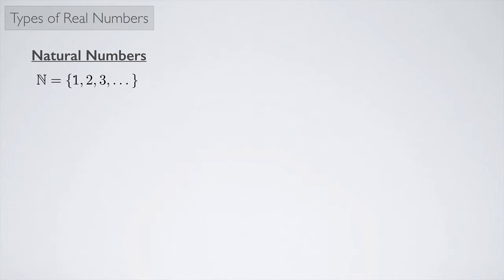And we denote the natural numbers with this funny-looking N symbol right here. And this notation, by the way, is set notation. So this says that the set of natural numbers is equal to, and then these are braces here indicating a set, and then it's the set of the numbers 1, 2, 3, and these dots indicate that it just keeps going: 4, 5, 6, 7, and so on.